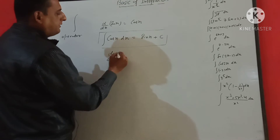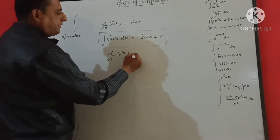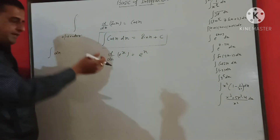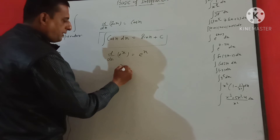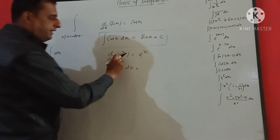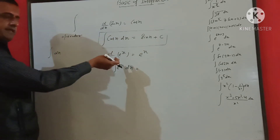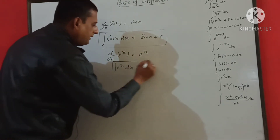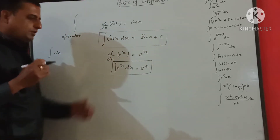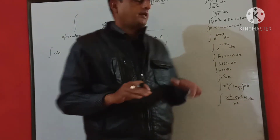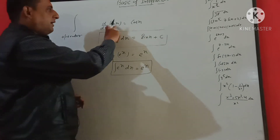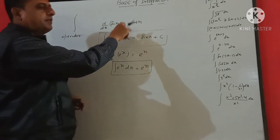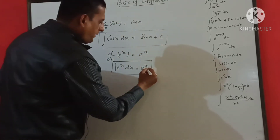Now suppose we need d/dx of e^x — the differentiation of e^x gives us e^x. So the integration of e^x will also give us e^x plus C. Basically, integration is a reverse order of differentiation. Whatever you differentiated to get cos x — if you integrate it, you get the original function back plus C.